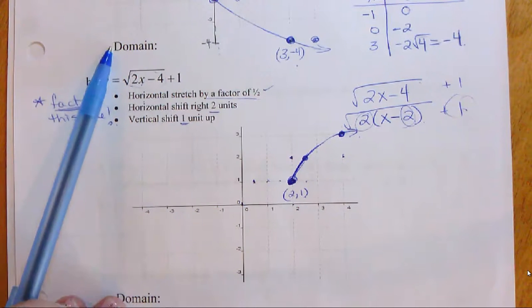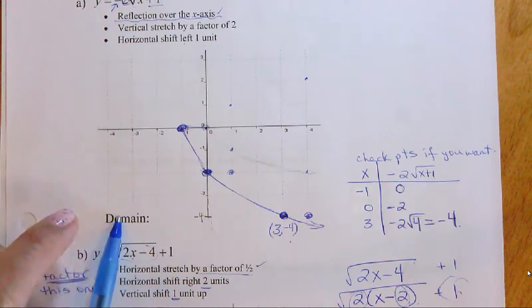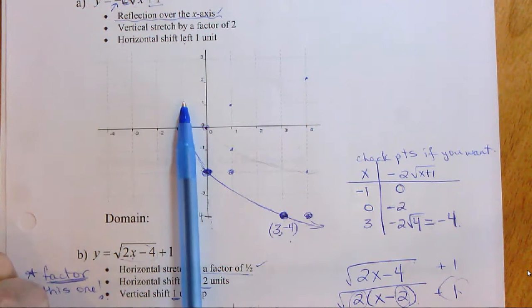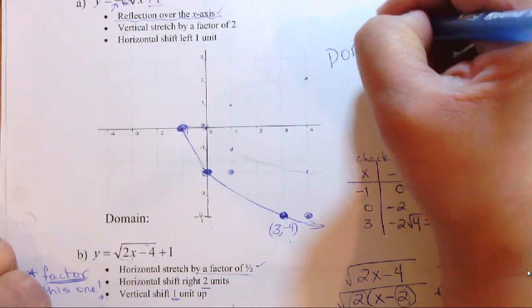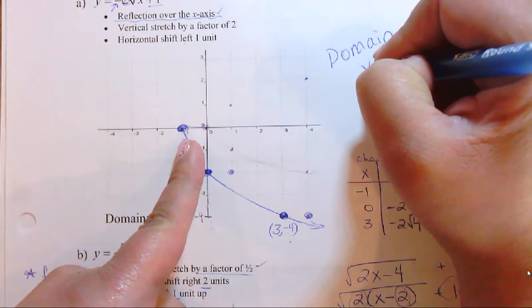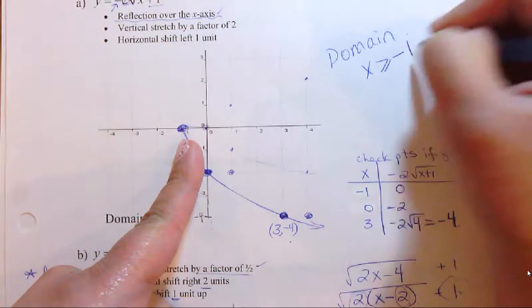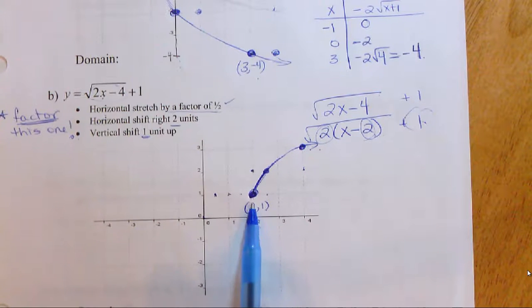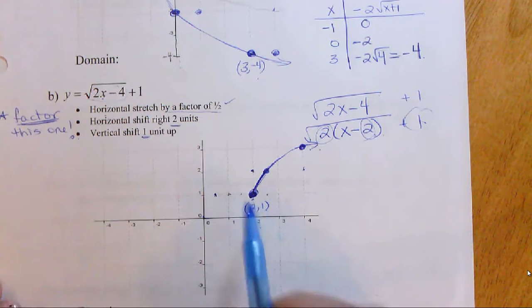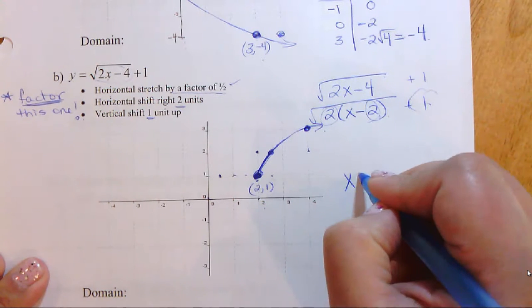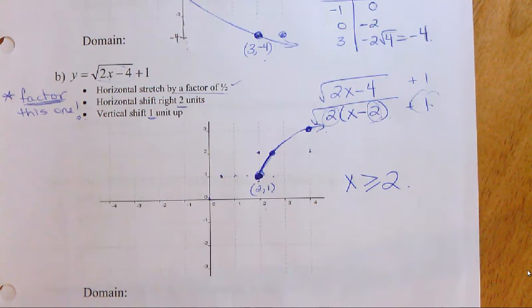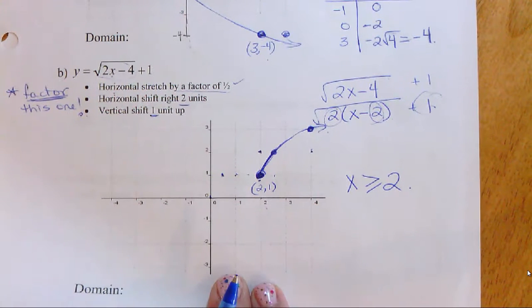We forgot to discuss the domain for the previous questions. Going back: for the first transformed graph, the smallest x value is negative one, so the domain is x is greater than or equal to negative one. For example B, the smallest x value on the graph is two, so the domain is x is greater than or equal to two.